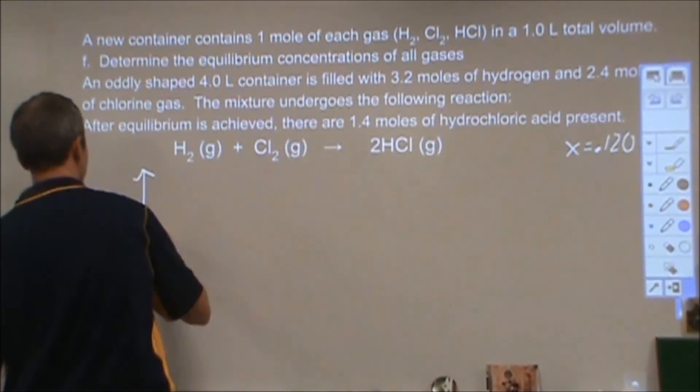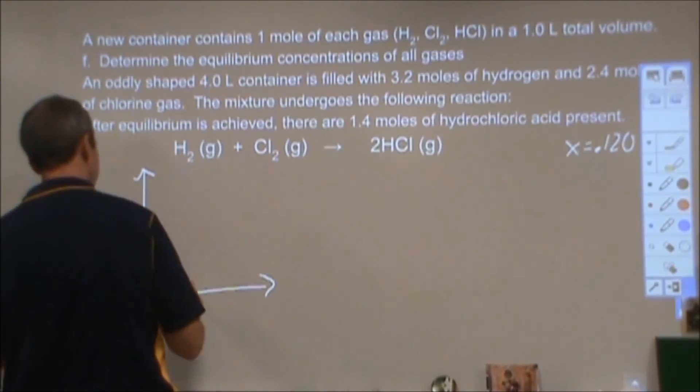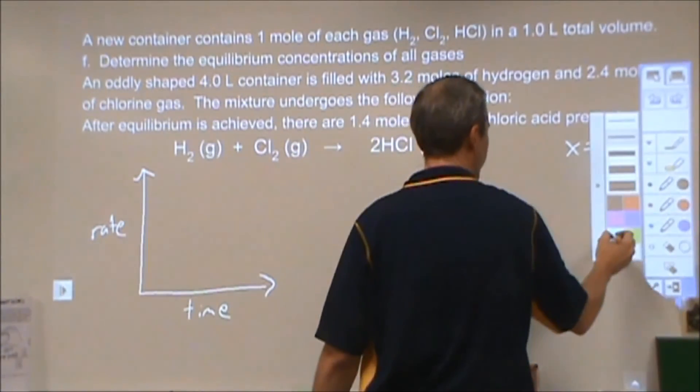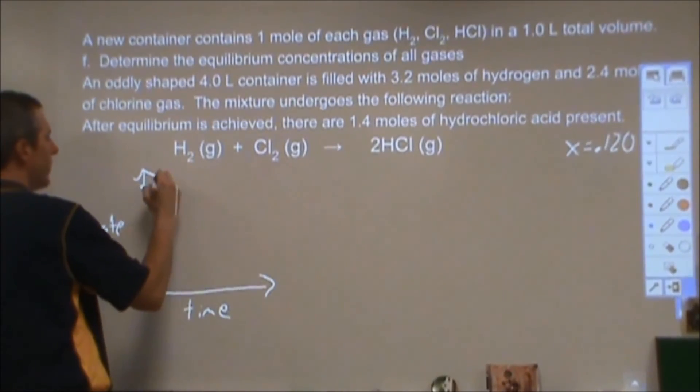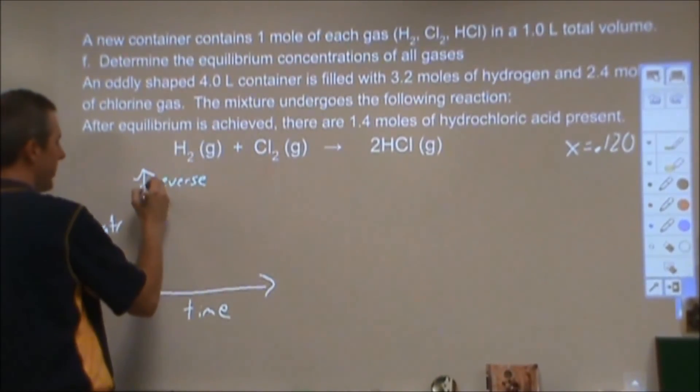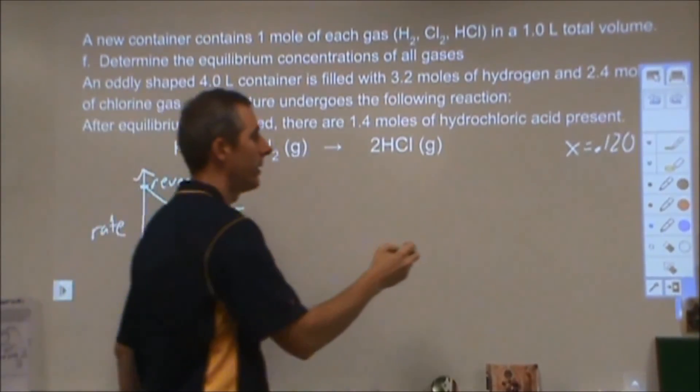So let's go ahead and do our rates over here. And for the rates, we don't actually know exactly what the rates are, but we're going to kind of draw just a graph to give us an idea of what they are. What we do know is the reverse rate started out higher than the forward rate. And then what's going to happen is that is going to decline until we get to equilibrium where it's going to level up.